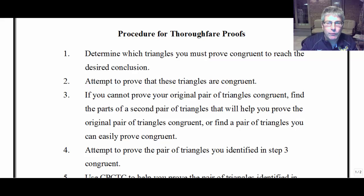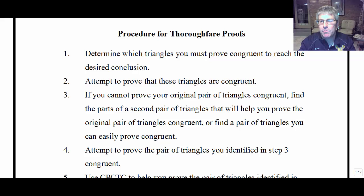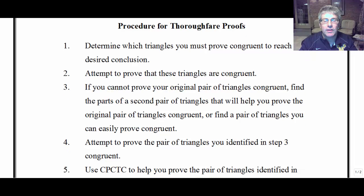The procedure with thoroughfare proofs, as you can see here on the screen: first, determine which triangles you must prove congruent to reach whatever that desired conclusion is. Then you'll attempt to prove those triangles congruent. Oftentimes, that first pair won't have enough information, so you'll have to find a different pair of triangles. Then you'll use CPCTC, or corresponding parts, to lead you into getting the second pair of triangles congruent.